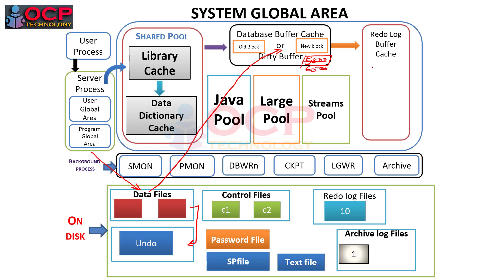After the block is updated, the particular values go into the redo log buffer cache. The redo log buffer cache stores entries like: employee ID 108, old salary 5500, new salary 6500 — along with the table name and employee ID. All these details are stored as redo entries in the redo log buffer cache.